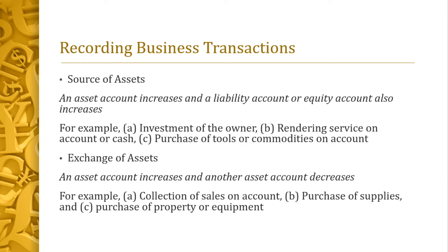For exchange of assets: one asset account increases and another asset account decreases. For example, collection of sales on account — cash increases and accounts receivable decreases; both are asset accounts. For purchase of supplies or property and equipment — cash decreases and the property or equipment account increases; both are asset accounts.